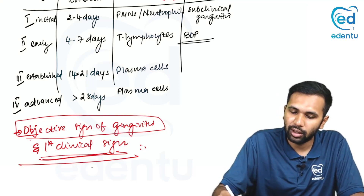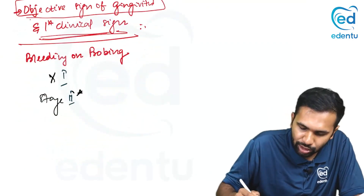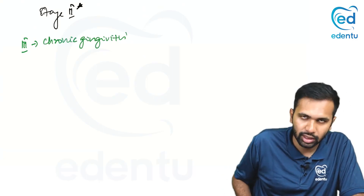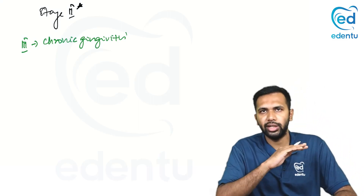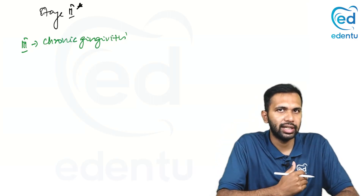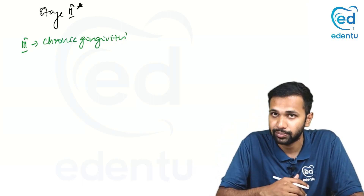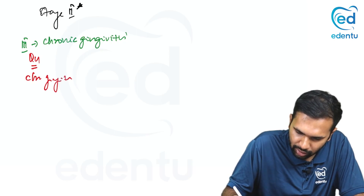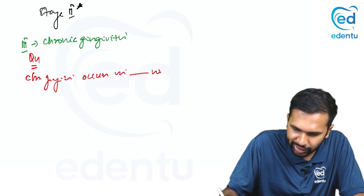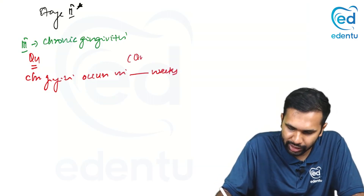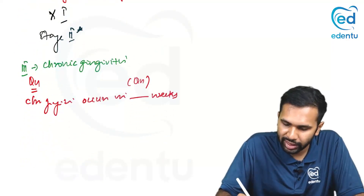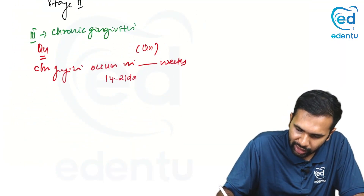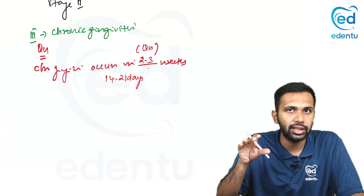Coming to stage 3, the established lesion — most importantly, this stage is most often referred to as chronic gingivitis. Although it is a misnomer, it is standardly referred to as chronic gingivitis. A previously asked exam question is: chronic gingivitis occurs in how many weeks? You should know that chronic gingivitis is the other name for stage 3, and stage 3 occurs in 14 to 21 days, or 2 to 3 weeks.